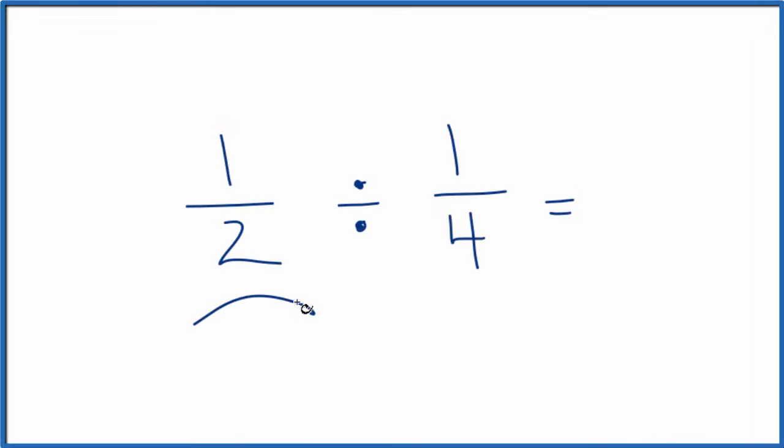Let's look at how we can divide 1 half by 1 fourth. So how do we do this? We have 1 half divided by 1 fourth.